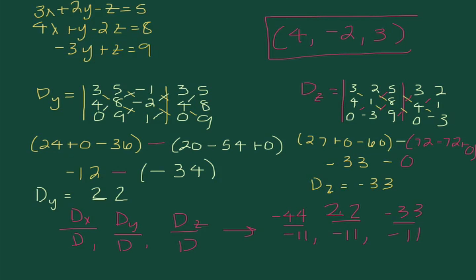Now, in order to ensure that this works, let's do a quick check. In my first equation, 12 minus 4 is 8. 8 minus 3 is 5. So, it works. Second equation, 16 minus 2 is 14. 14 minus 6 is 8. Lastly, I have 6 plus 3 is 9, which also works. So, here we go.